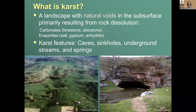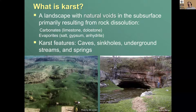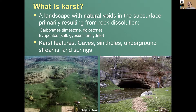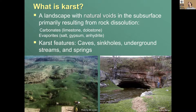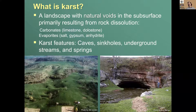We might start with the question: what is karst? Karst is a landscape with natural voids in the subsurface, and these voids result from the dissolution of the bedrock. The rocks most prone to dissolving easily in water are carbonate rocks — limestones and dolostones — and evaporites, which are salt deposits such as gypsum or anhydrite. These mineral deposits are laid down in closed basins or depressions that may have been filled with seawater and dry up over time in arid climates.